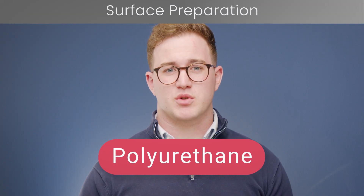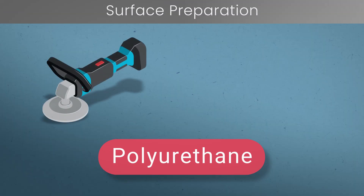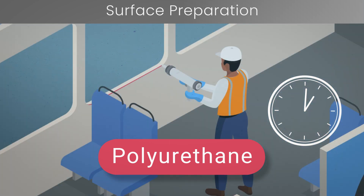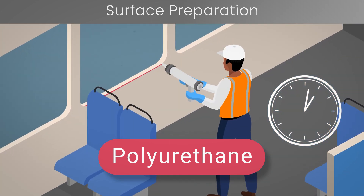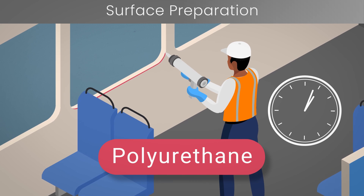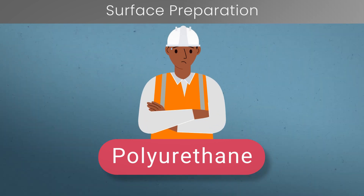You can learn more about this topic in our recent video on diisocyanate regulations. Traditional polyurethanes can also require extensive surface preparation. Abrading and sometimes priming the surface would be needed to ensure a strong bond. These added steps in the bonding process can impact production throughput and increase the likelihood of operator error.